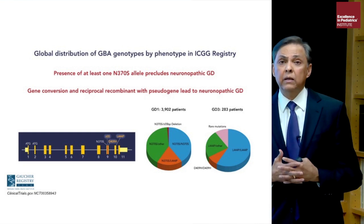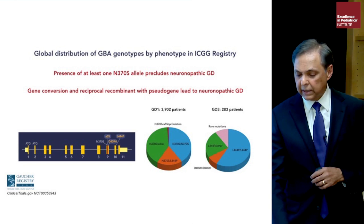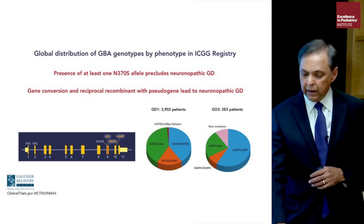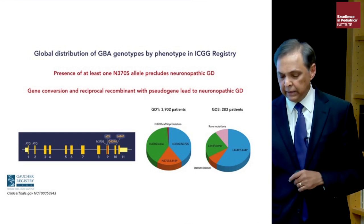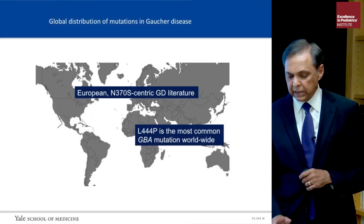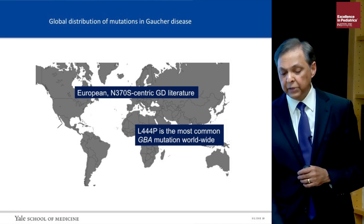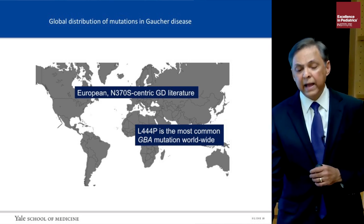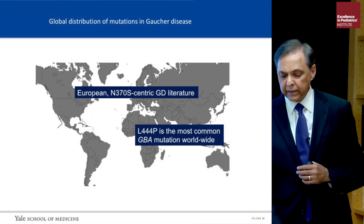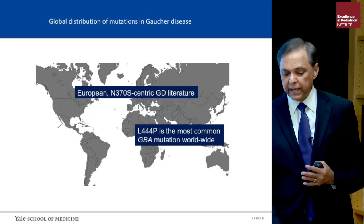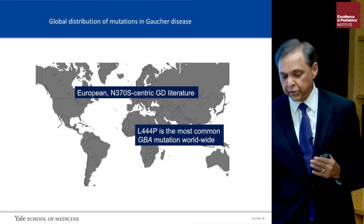For neuronopathic forms of Gaucher disease, commonly due to L444P homozygosity, it is quite common to have complex alleles. N370S Gaucher disease occurs predominantly in the European population, whereas worldwide L444P is the most common mutation. For all ethnicities, L444P is in fact a more important mutation compared to N370S, which is almost exclusively present in people of Caucasian ancestry.